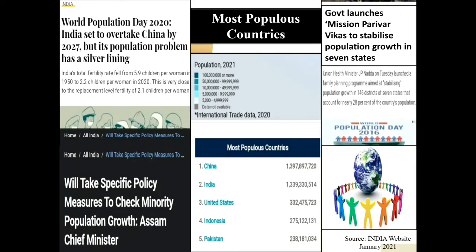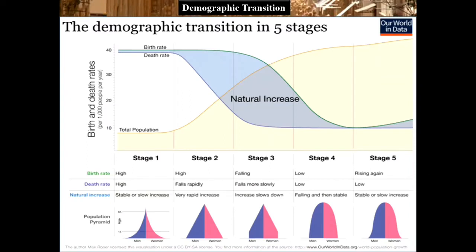China, India, United States, Indonesia, and Pakistan hold half of the world's population. These are the most populous countries in the world according to world demography. The demographic transition refers to the population cycle that begins with a fall in the death rate, continues with a phase of rapid population growth, and concludes with a decline in the birth rate. The five stages of demographic transition are presented here.